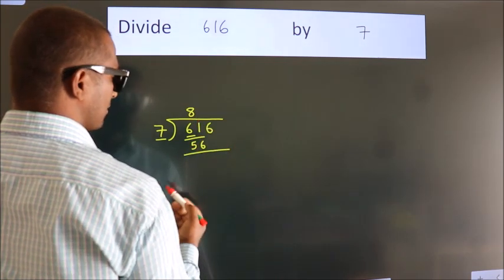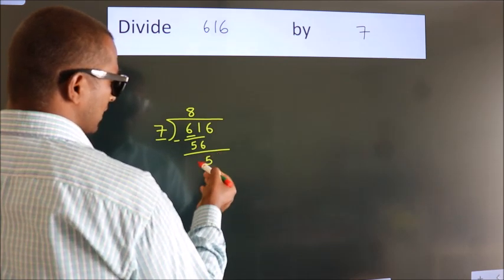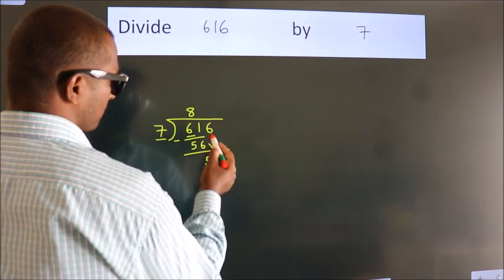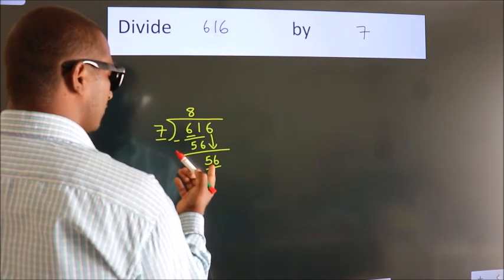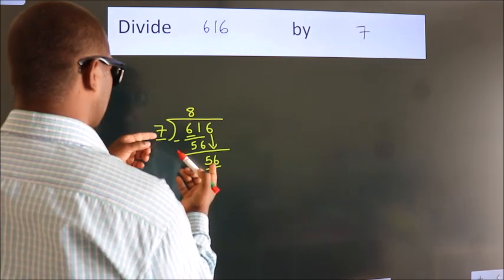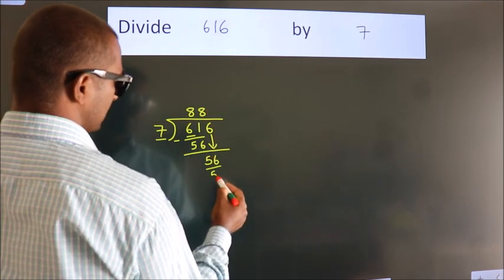Now we subtract and get 5. After this, bring down the next number. So 6 down, making 56. When do we get 56? In the 7 table: 7 times 8 is 56.